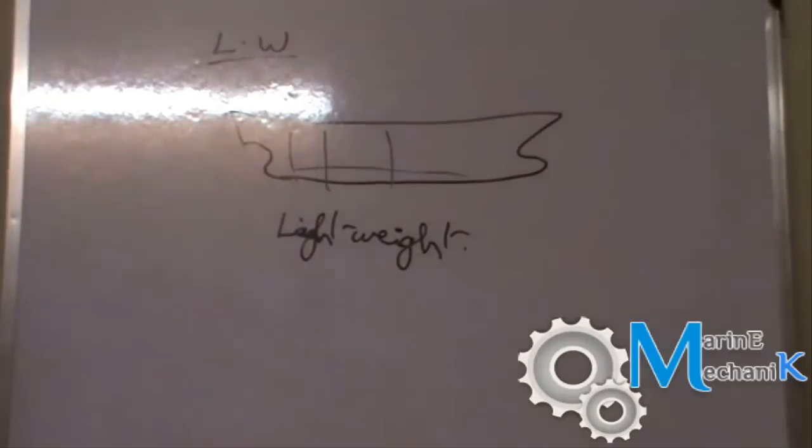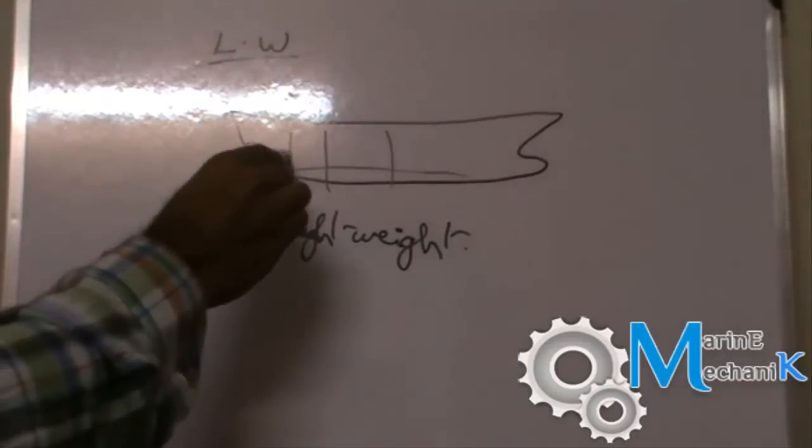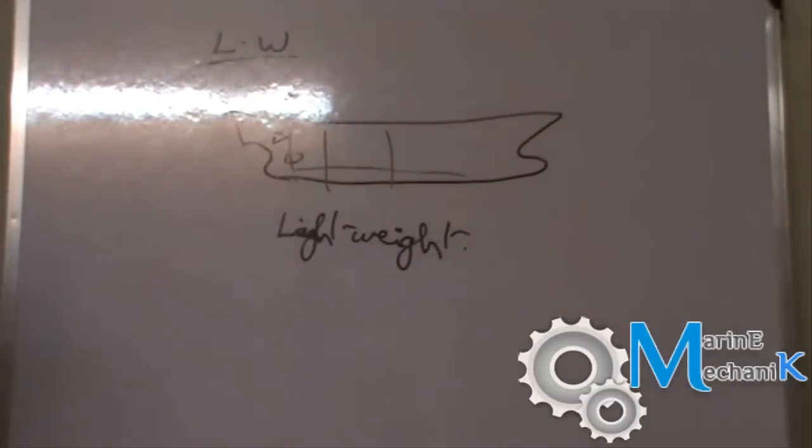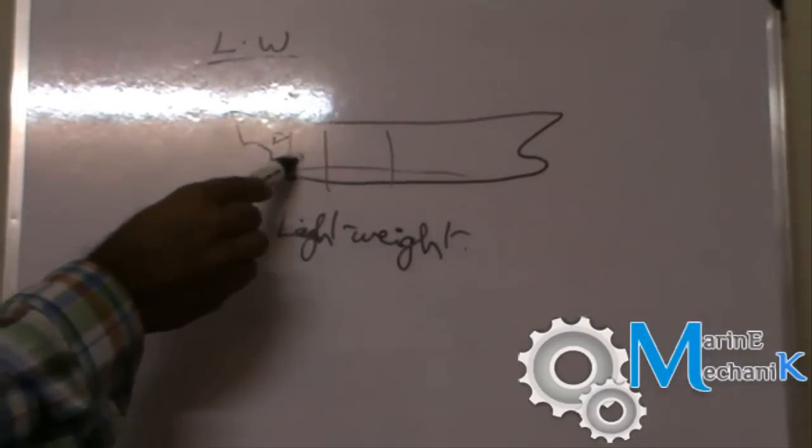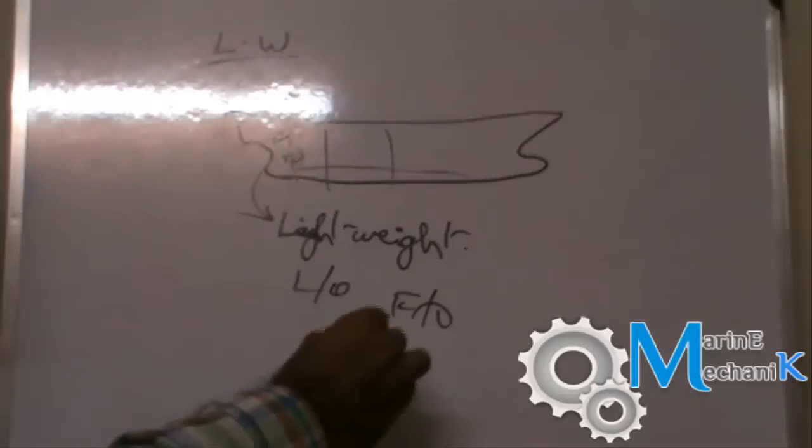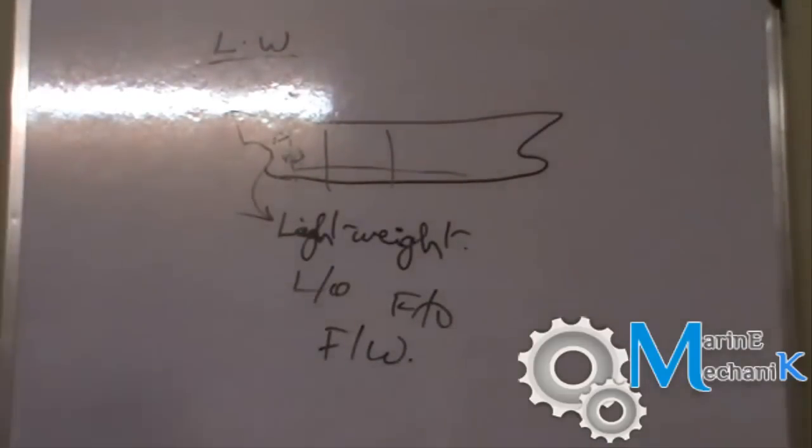Now, one will be having a slight confusion whether if we place the machinery on board, let's say the main engine has been erected, the generators have been erected, boilers have been erected. Should we consider all these things for the lightweight? The answer will be yes. To the best of my knowledge, whatever I have referred, all the generators, main engine, boiler, tanks, everything has to be accounted for lightweight. The ship just out of the shipyard ready to sail. But that should not have lube oil or fuel oil or fresh water, all the consumables, stores, spares, nothing should be there. Just a bare ship. That's lightweight.